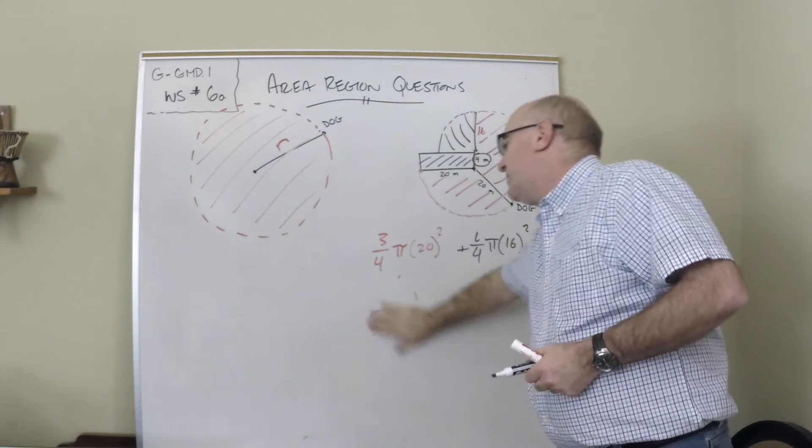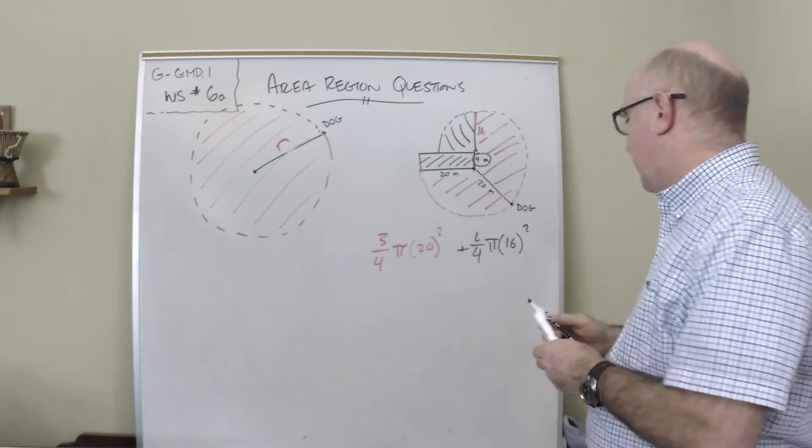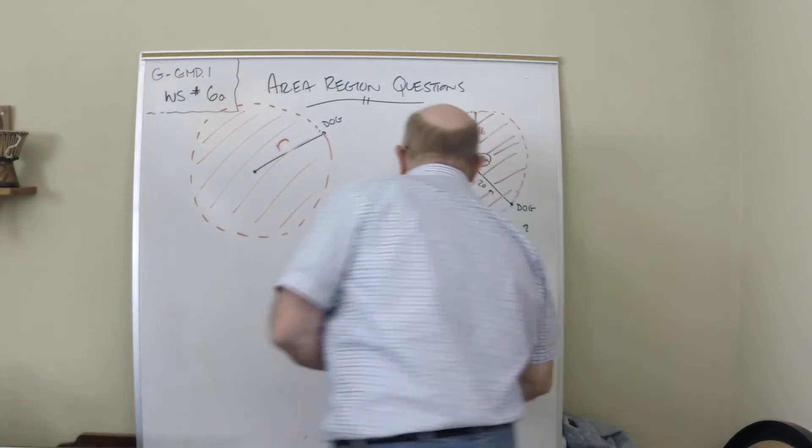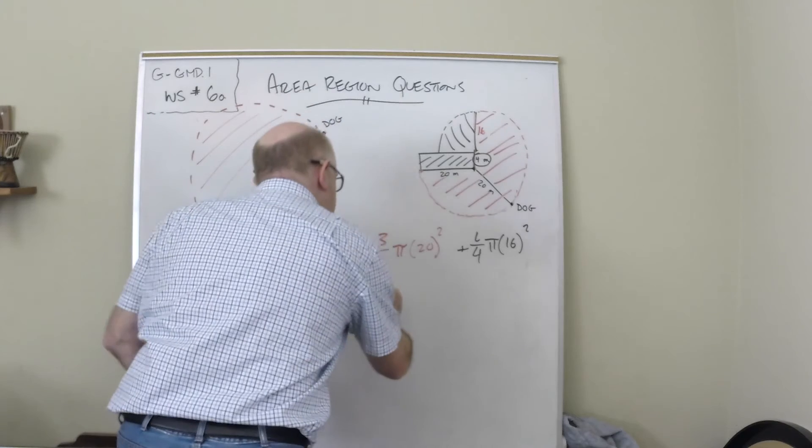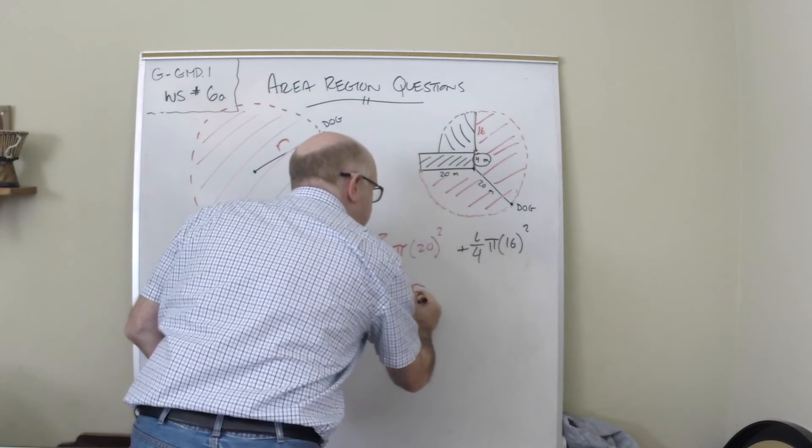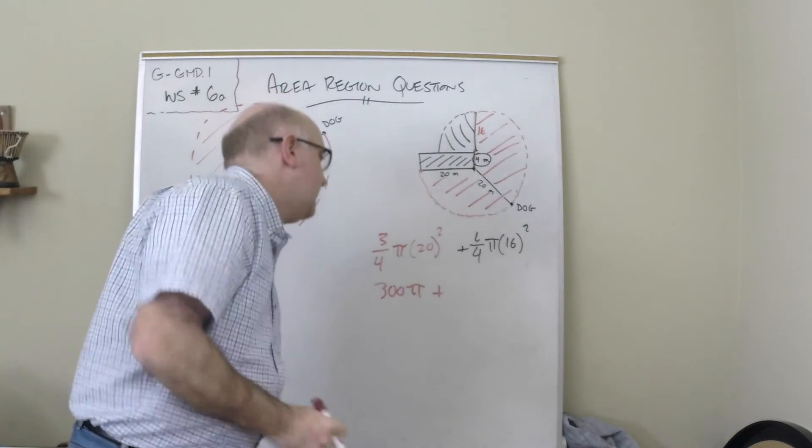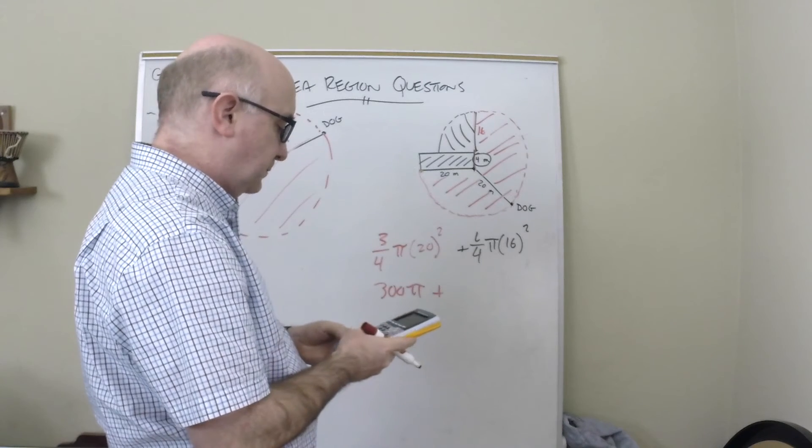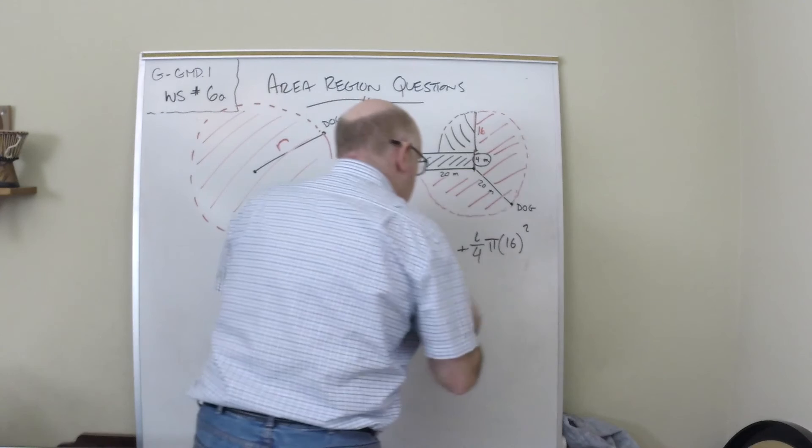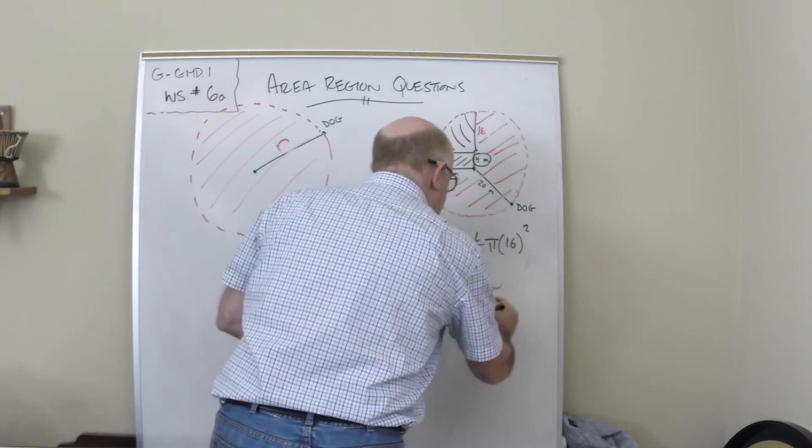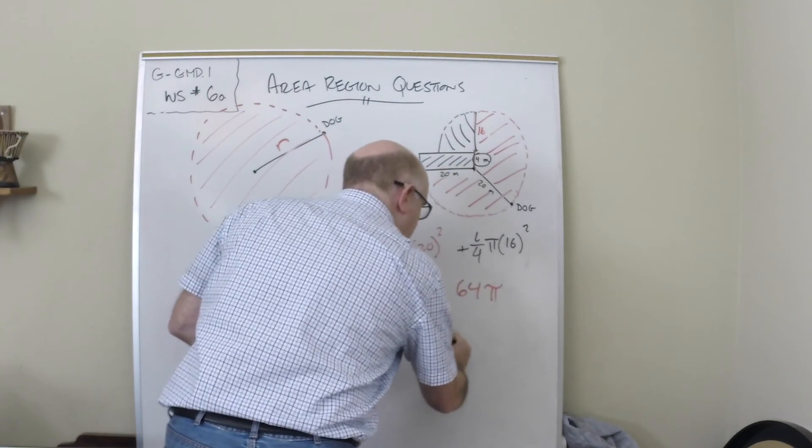Let's do the math here. 20 squared is 400, times 3/4 is 300π. 16 times 16 is 256, divided by 4 is 64π. So that's 364π meters squared - a nice little problem.